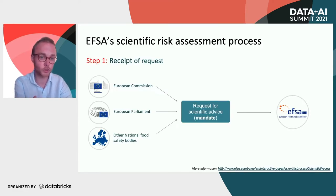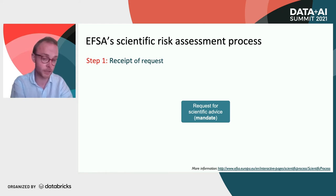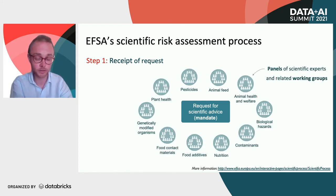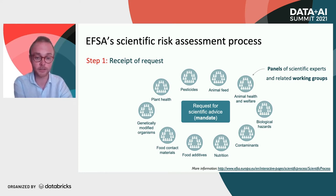I will give you an overview of the core risk assessment process at EFSA, because it's important for understanding the context of the project. There are three main steps. The first step is the receipt of the request — the three typical European bodies mandate EFSA to work on a particular risk assessment, freeing up time and resources for scientific advice. Within EFSA, the organization is structured around 10 panels of external independent scientific experts, each dedicated to a particular area within the food and feed chain, with related working groups doing the actual work. A mandate coming in would be assigned to, for example, the food contact materials panel.